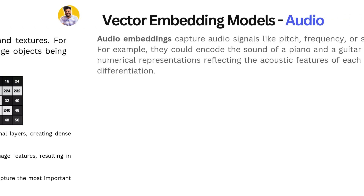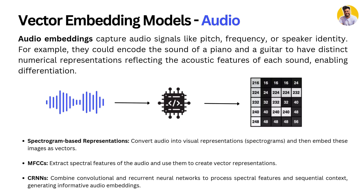Next we have audio embeddings. Audio embeddings capture audio signals like pitch and frequency. For example, they could encode the sound of a piano or guitar to have a distinct numerical representation reflecting the acoustic features of each sound, enabling differentiation based on amplitude or pitch. We can use spectrogram-based representations, MFCCs, or combined convolutional and recurrent neural networks to build audio embeddings.